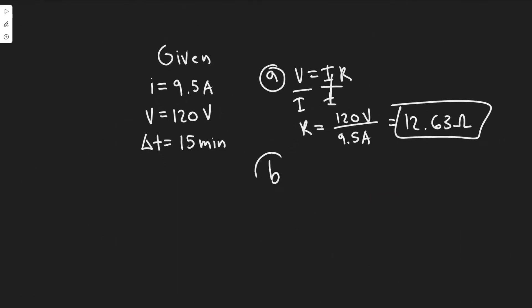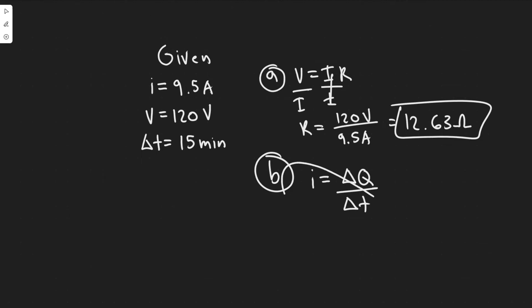Let's go ahead and do Part B. How much charge passes through in 15 minutes? We're dealing with charge, so we'll use the definition of current: I equals the change in charge over the change in time. I want to find the charge, and we know the current from the problem, and we're given the time. We have these two variables so we can solve for delta Q.